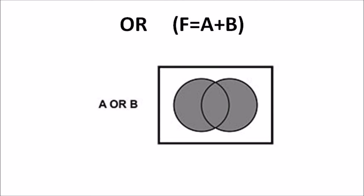The fourth representation is the OR function, where f equals A plus B. The OR gate is an electronic circuit with two or more inputs producing only one output. The OR gate produces output one when any one of its inputs is one; if all inputs are zero, the output is zero. A OR B means we consider all elements of A and all elements of B. The shaded area in this figure represents A OR B, or A union B.